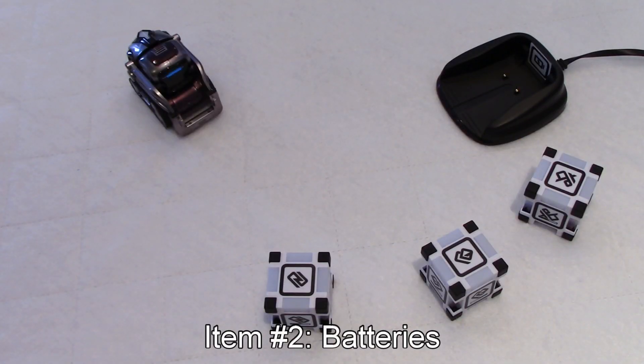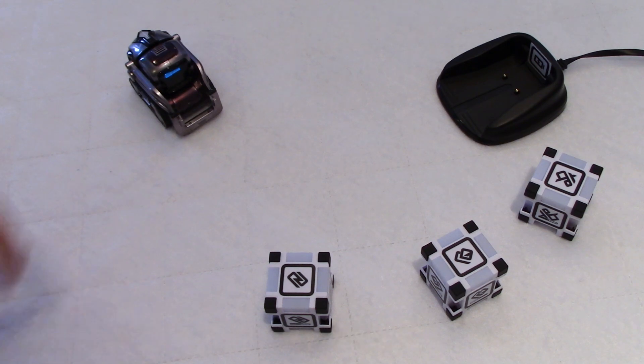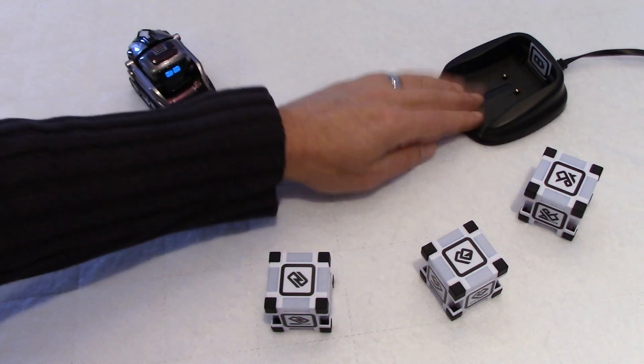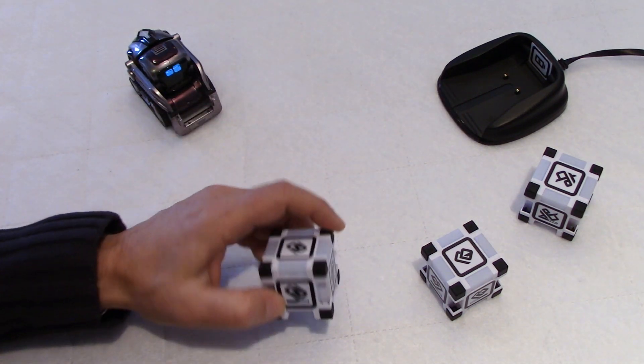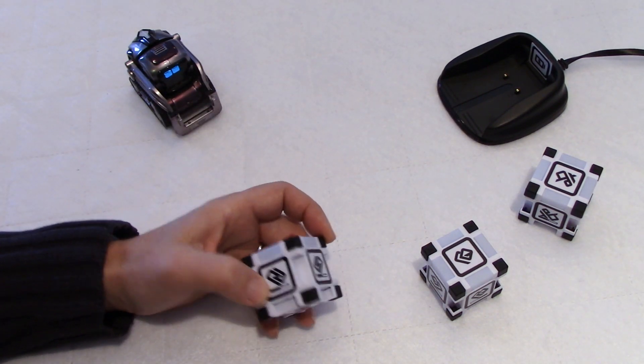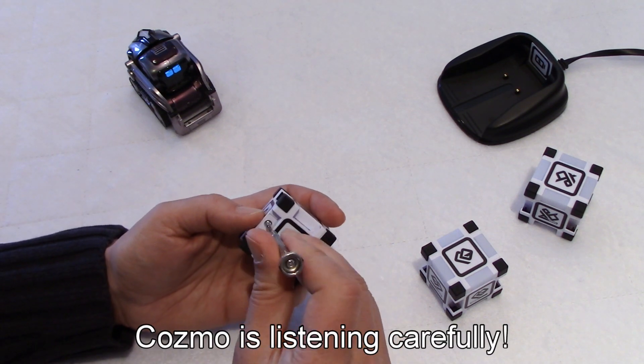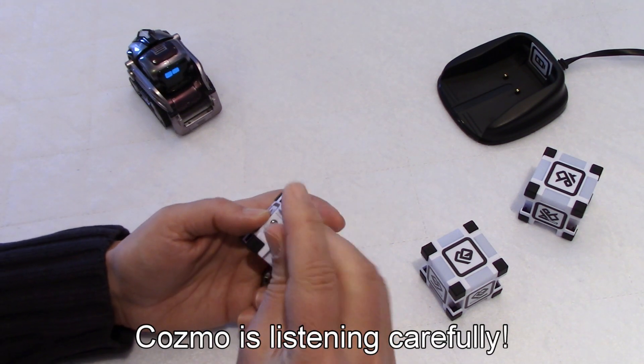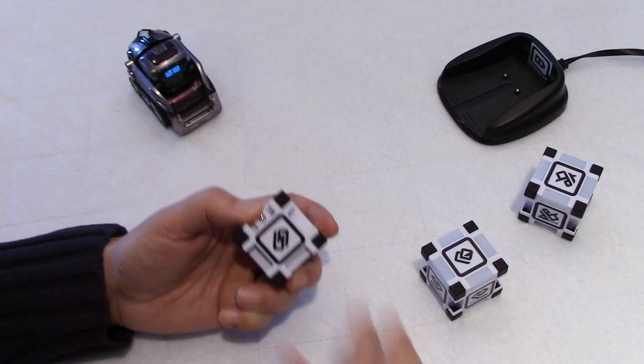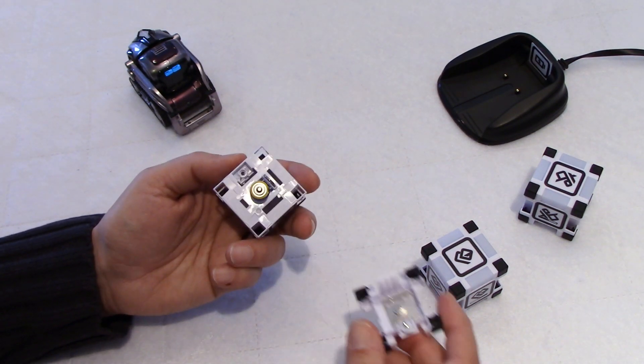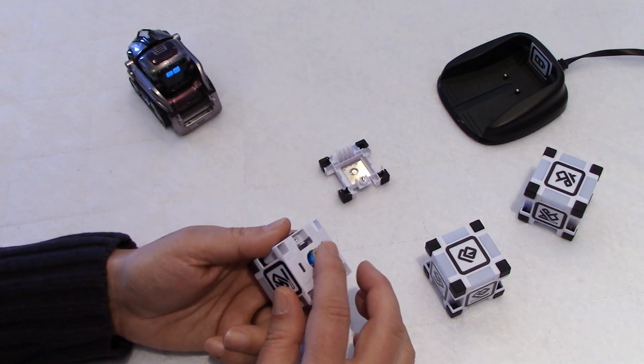The second thing I want to talk about is batteries. As we know, our friend Cozmo is rechargeable on his station, but the cubes are not rechargeable, they have batteries. So let me show you something here. You just need to remove this screw at the bottom and then you just open it like this. It's on a removable hinge as you can see and now you have the battery inside.